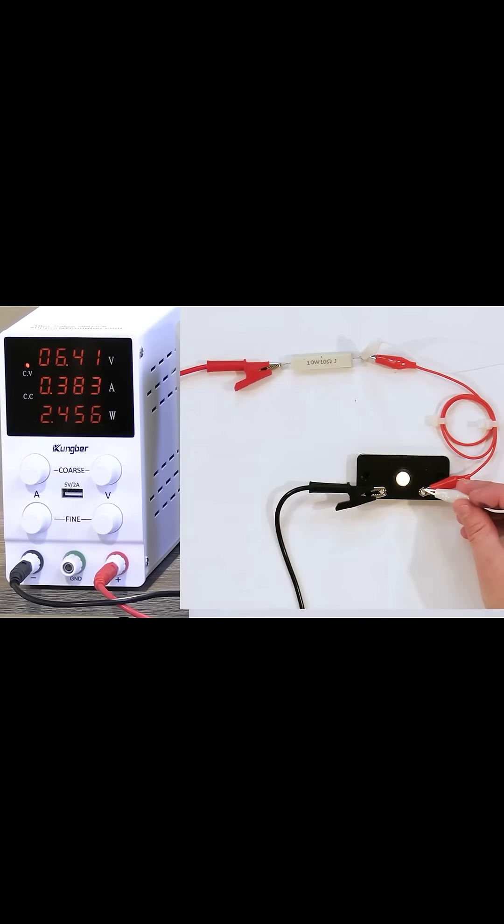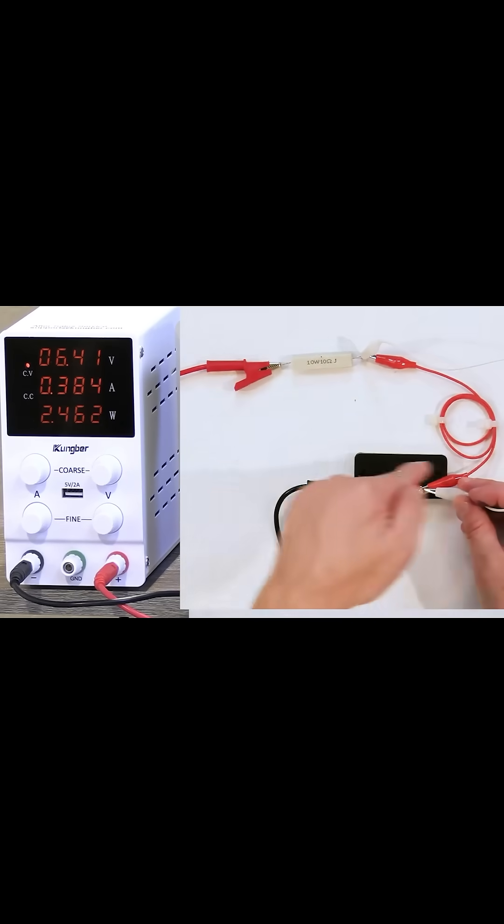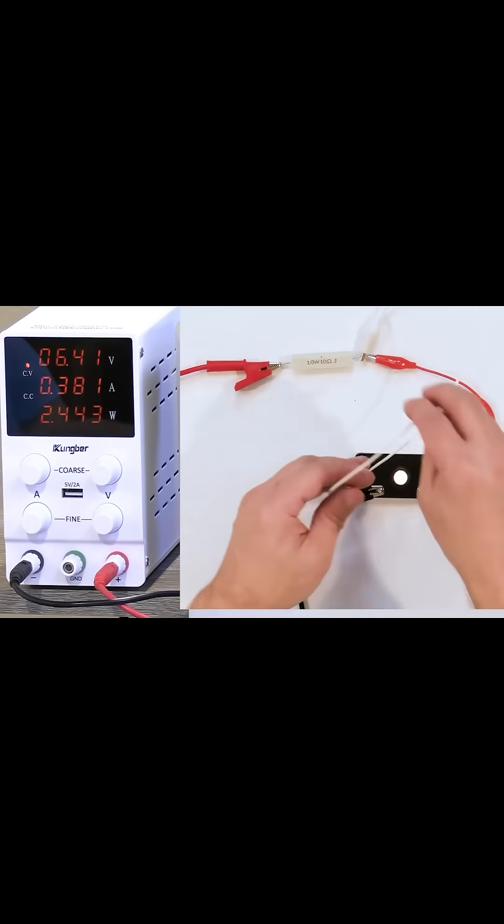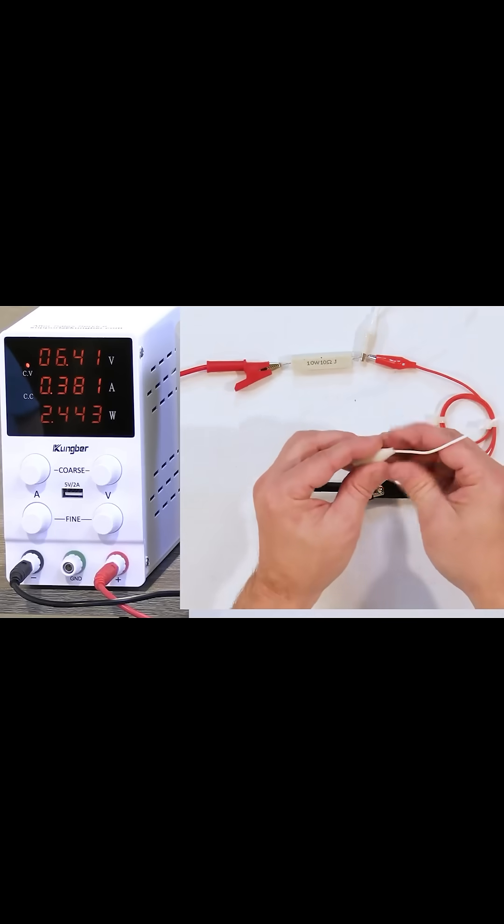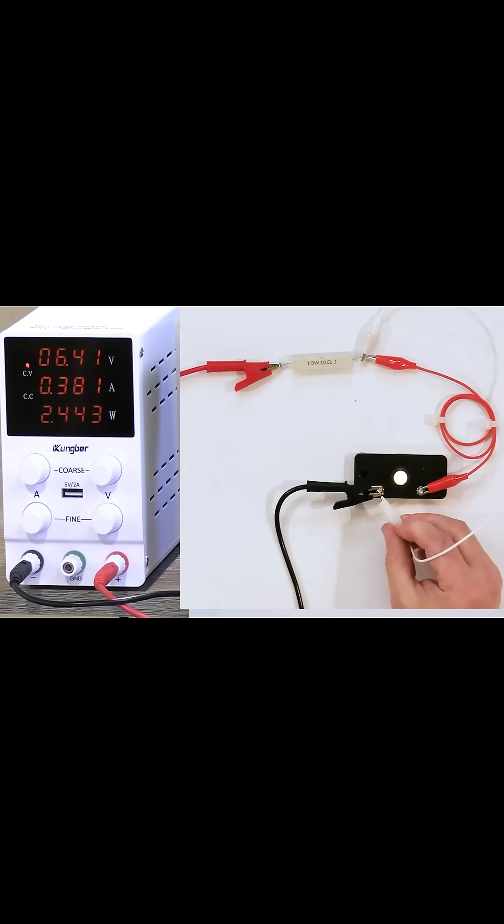If I connect it here, nothing's going to happen at all because it's just like two parallel paths the electricity can go. But if I connect it here, all the electricity is going to go through the white wire and completely bypass the load. Let's see what happens when I touch it.